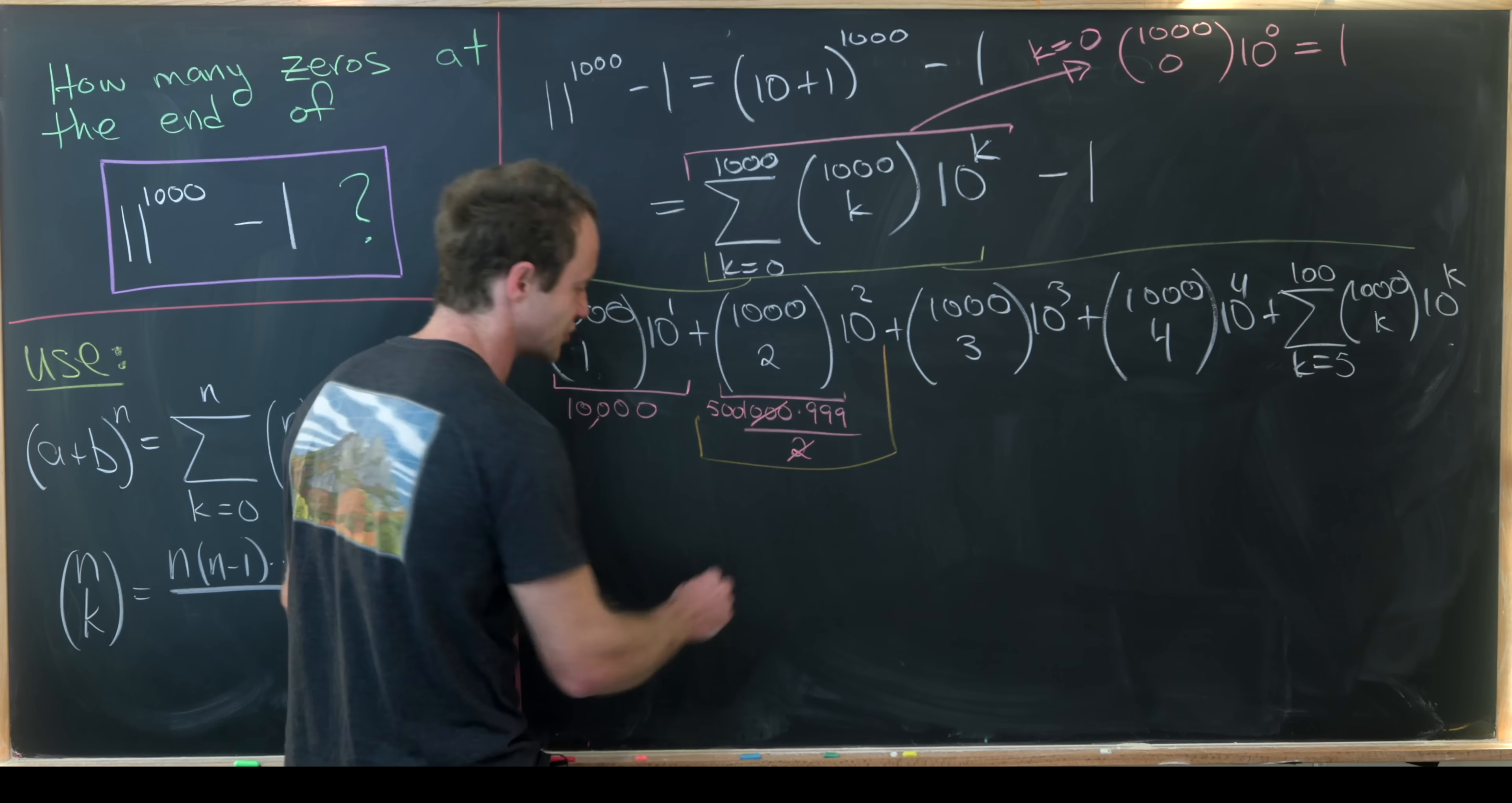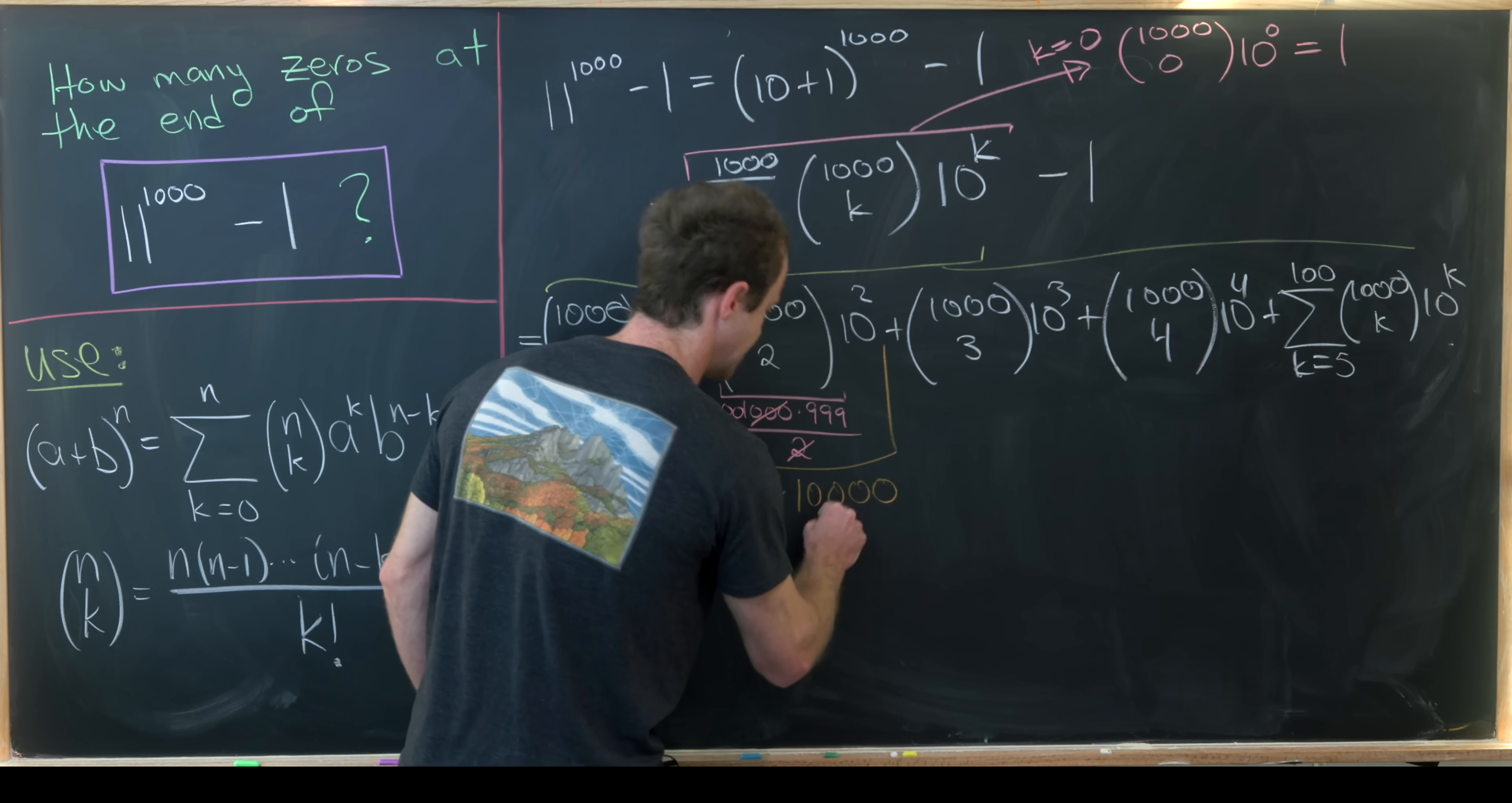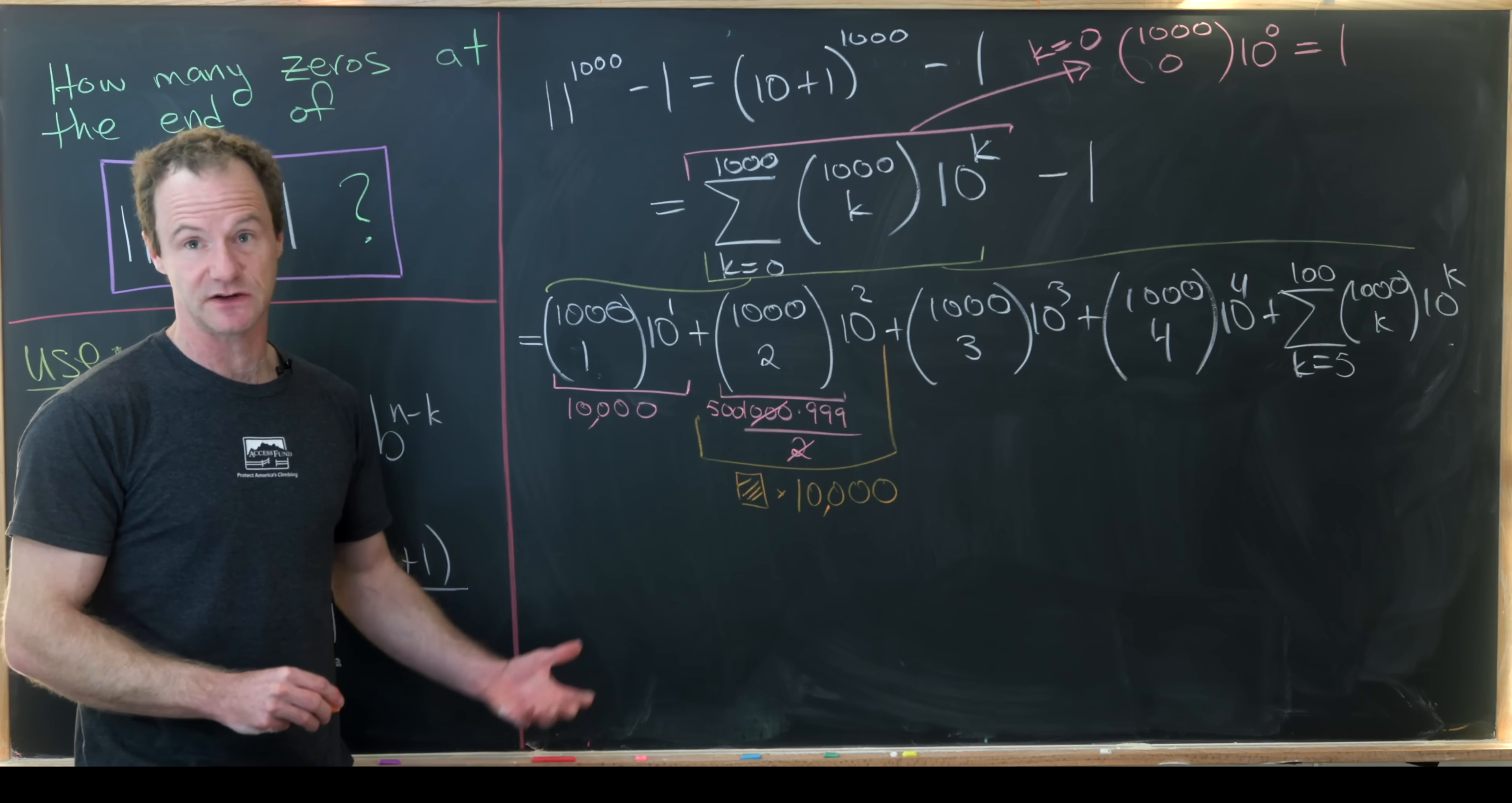So maybe I'll just write that as this box times 10,000, that thing ending in four zeros, where we're just assuming that this box is some number that does not end in zeros.